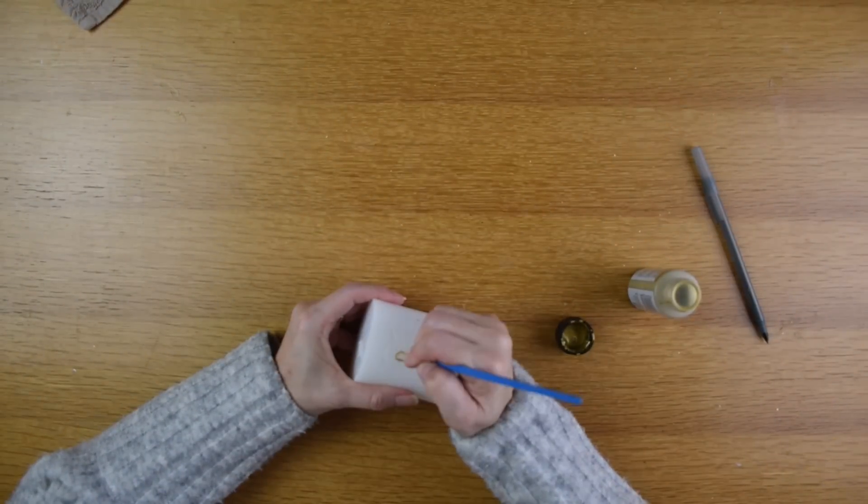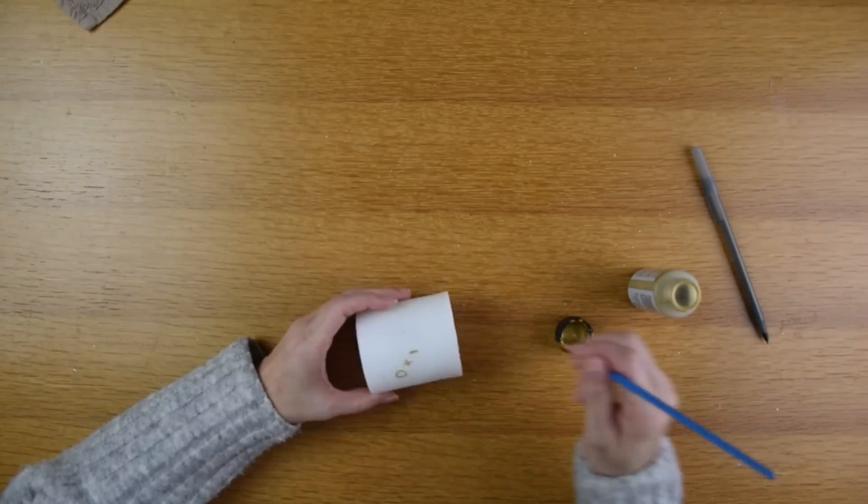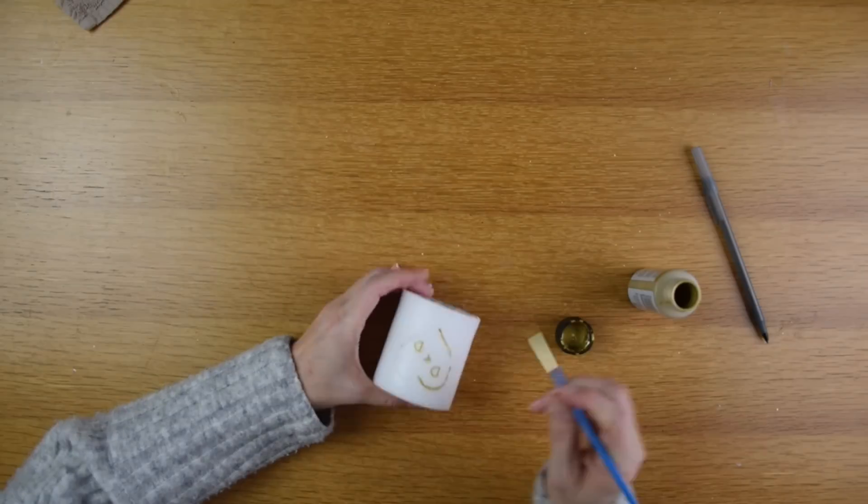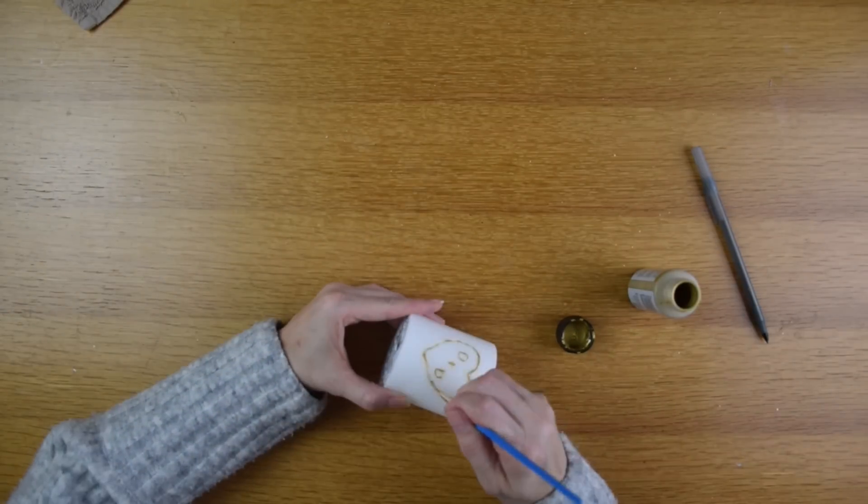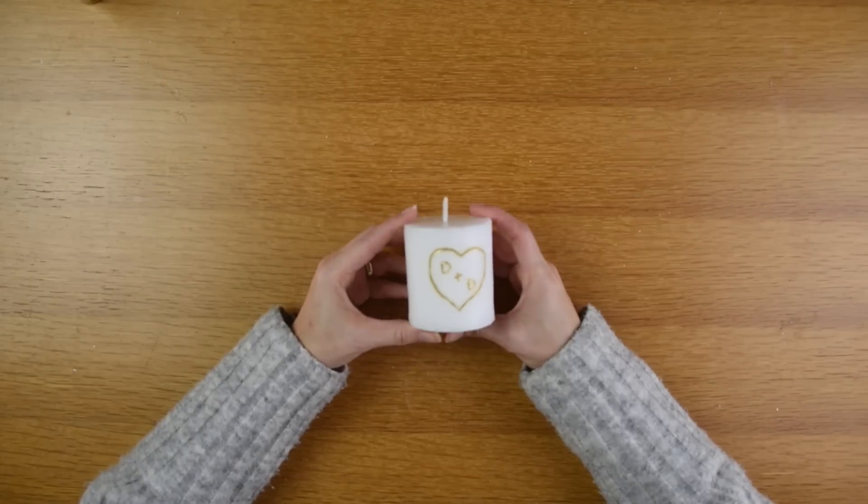Now that I have everything carved out I am using that metallic gold paint and I'm going ahead and filling in everything that I carved out. And here is the finished candle.